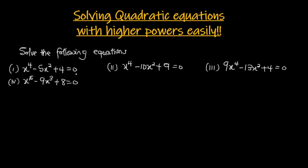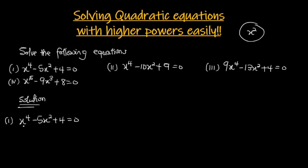Let's tackle these problems and see how to solve them much more easily. For the first example we have x⁴ - 5x² + 4 = 0. In this type of equation we need to use a substitution method, but first we rewrite the equation so it looks like a normal quadratic. We rewrite x⁴ as (x²)², so we have (x²)² - 5x² + 4 = 0.